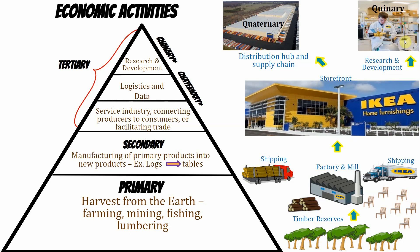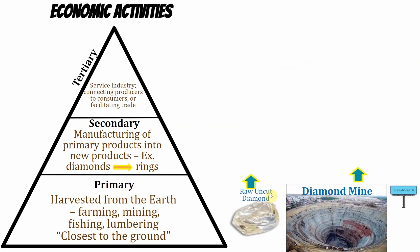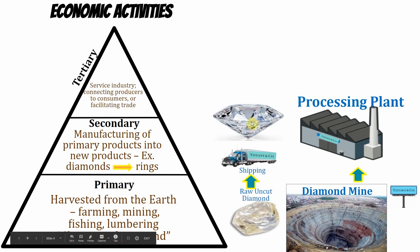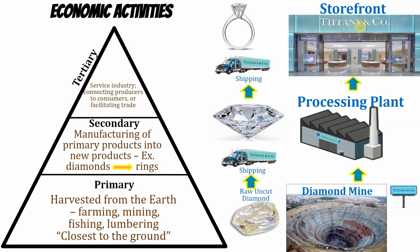Let's do diamonds. Diamonds come from the earth — that's primary. They mine them from African diamond mines. Secondary would be the processing plant, where a raw diamond is turned into a finished, shiny diamond. Tertiary covers how diamonds get from the mine to the processing plant on a truck, and also the storefront — like Tiffany's at the mall. That's how you take a raw good and get it from mine to market.